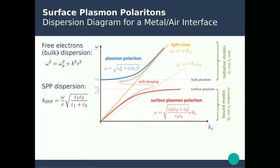Going back to the free electrons or bulk plasma, this comes directly from the Drude model. In the undamped case — neglecting the damping term gamma or considering large frequencies much larger than gamma — you obtain the dispersion relation: omega squared equals omega_p squared plus k squared c squared, where omega_p is the bulk plasma frequency. Plotting this gives the blue line. When K_x equals zero with no incoming light, this reduces to just the bulk plasma frequency — bulk plasma oscillation.